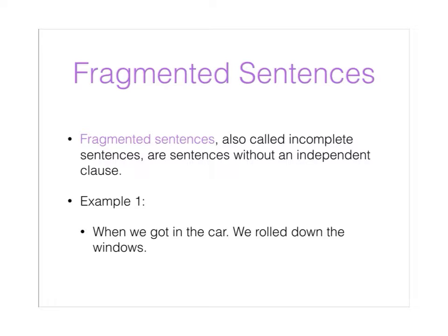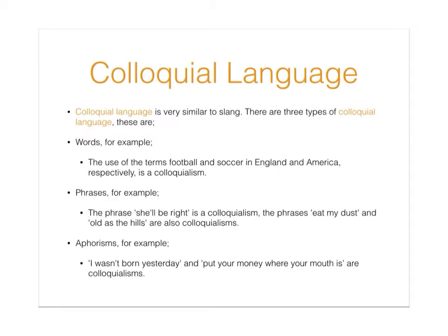Fragmented sentences, also called incomplete sentences, are sentences without an independent clause. Example 1: 'When we got in the car, we rolled down the windows.'